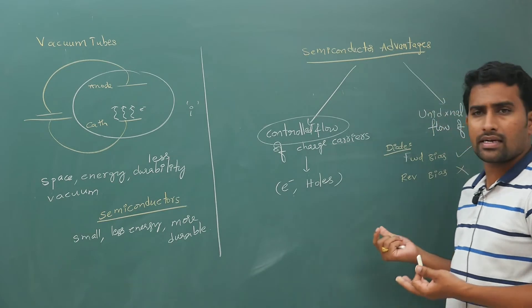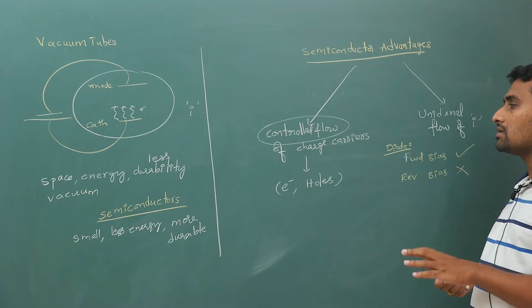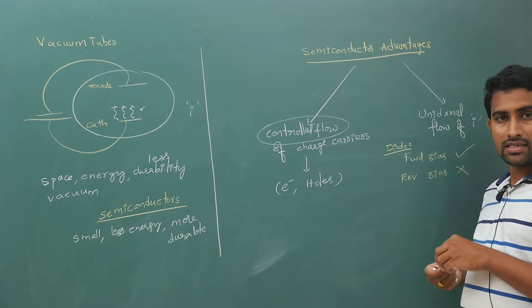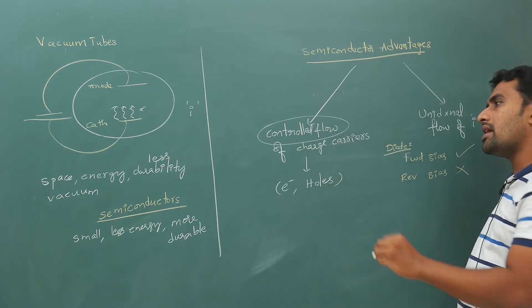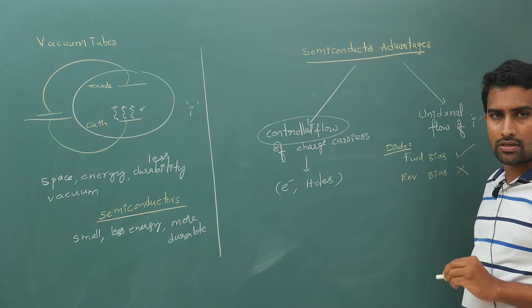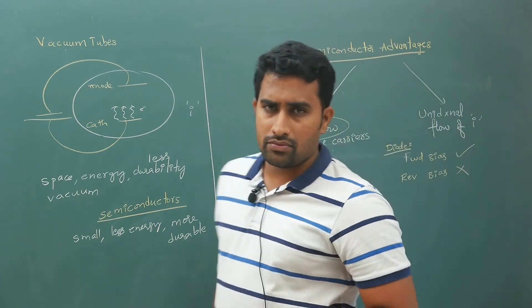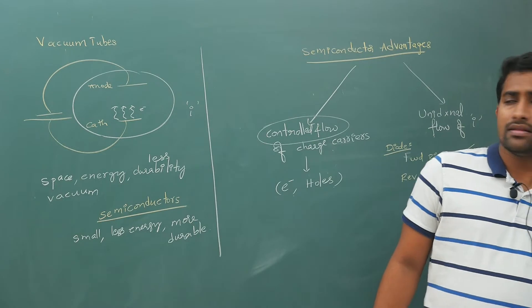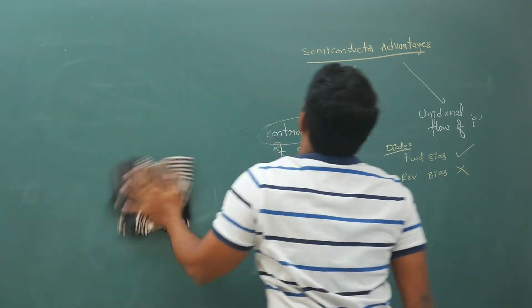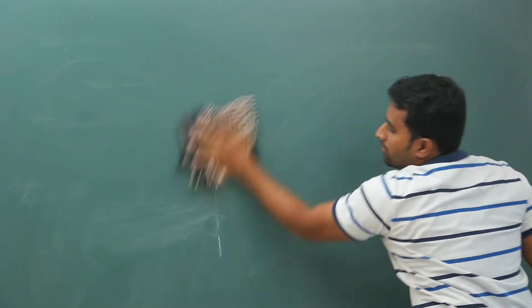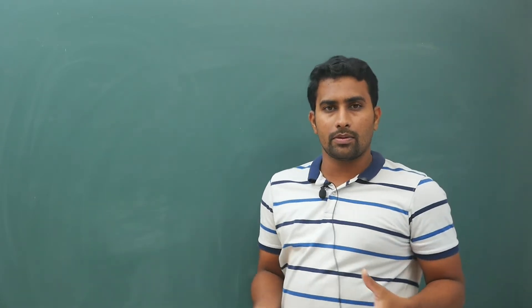For example, in a diode, forward bias allows current to flow and reverse bias does not — you can decide the direction. If you apply voltage between 10 and 15 volts it should conduct, but less or greater than that, it should not — you can impose conditions. That is why we say controlled flow of charge carriers. According to whatever function is required, you can control the device, making semiconductors very helpful in everyday life.